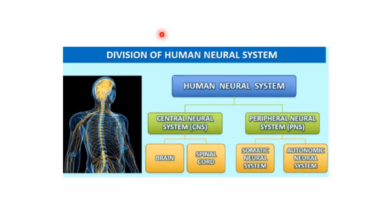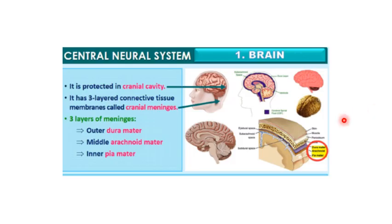Now let us understand the division of the human nervous system. It is basically divided into two parts: the central nervous system (CNS) and the peripheral nervous system (PNS). The central nervous system includes the brain and the spinal cord, while the peripheral nervous system includes the somatic neural system and the autonomic neural system. The brain is protected by the cranial cavity and has three-layered connective tissue membranes called cranial meninges.